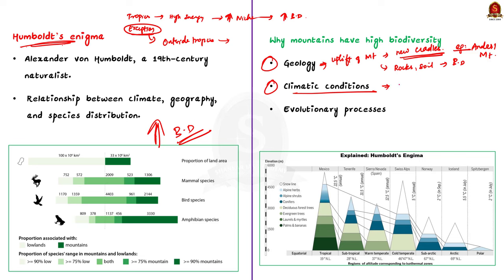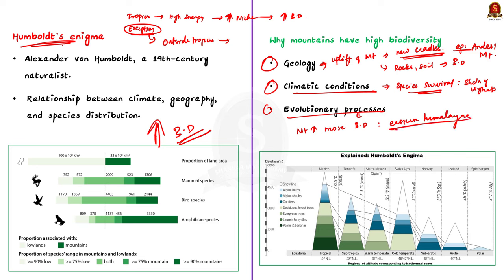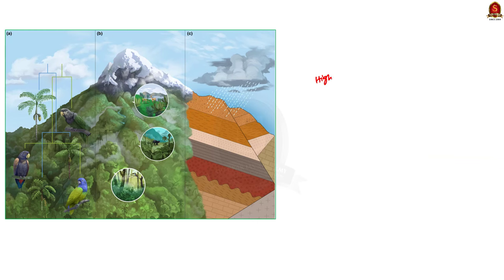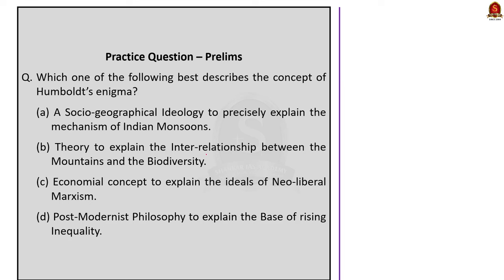Secondly, with respect to climatic conditions: species on climatologically stable mountains persist there for longer periods, so these places act as 'museums' that accumulate many species over time — for example, shola forests in the Western Ghats. Thirdly, regarding evolutionary processes: mountains with more geological diversity tend to have more biological diversity. For example, the Eastern Himalayas have groups of birds that evolved elsewhere and dispersed to the Himalayas, resulting in highest diversity there. So the correct option for Humboldt's Enigma is option B — a theory to explain the interrelationship between mountains and biodiversity.